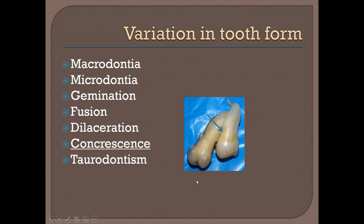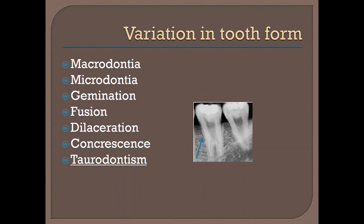Concrescence is fusion between two adjacent teeth at the level of the cementum, and it is clinically expressed as failure of eruption, identified by radiographic assessment — best with a cone-beam CT scan. Taurodontism is a wide trunk of teeth. In terms of malocclusion it doesn't affect much, but if extraction is planned, we would prefer to extract a tooth with this anomaly carefully. Root canal treatment will be more difficult, and this should be considered if extraction is necessary during orthodontic treatment.